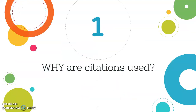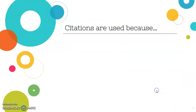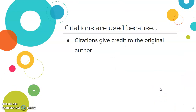Let's start with why citations are used. First, citations give credit to the original author. In other words, citing your sources means that you're attributing existing research to its creator, and it helps in avoiding plagiarism.